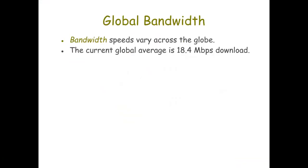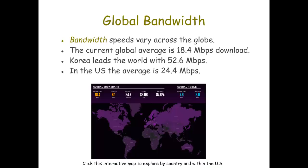Let's take a look at what bandwidth is on a global scale. Bandwidth speeds vary across the globe depending on where you are and what kind of internet access you have. The current global average is about 18.4 megabits per second download. Korea leads the world with 52.4 megabits per second, and in the U.S. the average is about 24.4 megabits per second. If you click on the map, you'll be able to explore by country and within the United States what the average bandwidth speeds are.